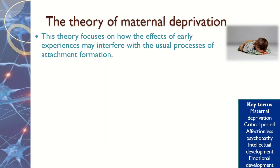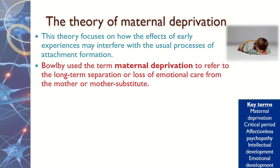The theory of maternal deprivation focuses on the early experiences that impact on the formation of an attachment. Bowlby talked about the critical period being around naught to two years, so we're talking about very early in life having a negative impact on later life and how they cope in adulthood. He used the term maternal deprivation to refer to long-term separation or loss of emotional care, and although it's normally the mother who is the primary caregiver, it can be any mother substitute — for example, the father, auntie, or uncle.